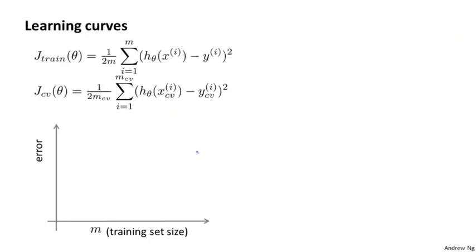Here's what a learning curve is. To plot a learning curve, what I usually do is plot J_train, which is the average squared error on my training set, or J_CV, which is the average squared error on my cross-validation set, and I'm going to plot that as a function of M — that is, as a function of the number of training examples I have.